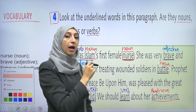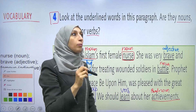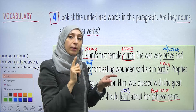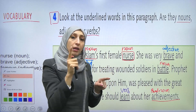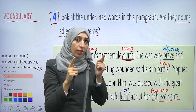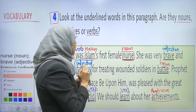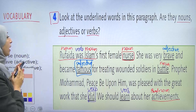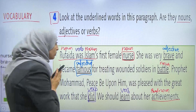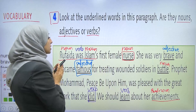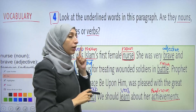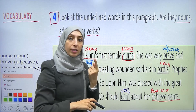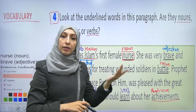هون إحنا منستخدمها لحتى إنو نحكي عن رفايدة — هي male ذكر أو female أنثى. So she is a female. Female is a noun. First is an adjective because it shows the number. الأولى.